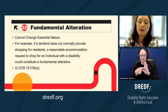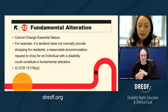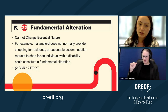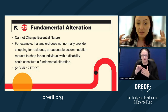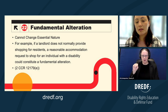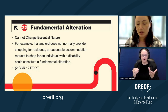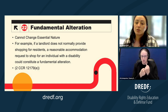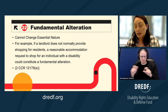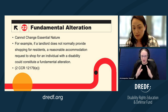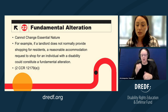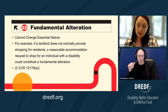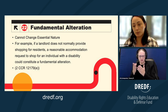Another example of fundamental alteration: if a landlord doesn't normally provide social services. FEHA applies not just to traditional landlords — someone can also be evicted from permanent supportive housing or social housing. In housing where social services are included, a reasonable accommodation could involve changing those services. But in run-of-the-mill housing with no social services, requesting social services would be a fundamental alteration.